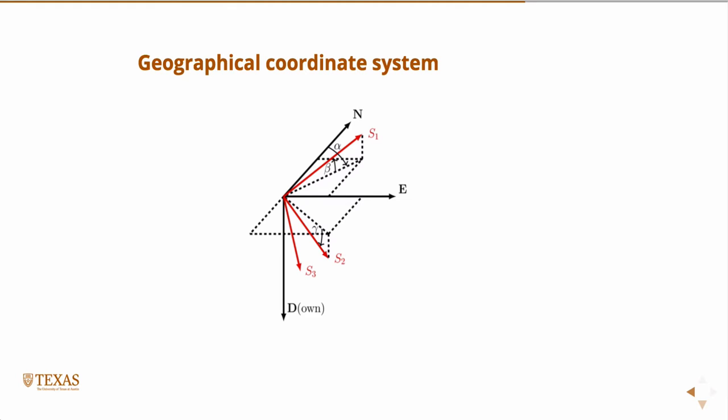So we have our principal stresses, and they are orthogonal. The three principal stresses are orthogonal, and so all we're doing is defining a set of angles between the principal stress frame, the orthogonal principal stress frame, and the geographic frame, which is northeast and down.